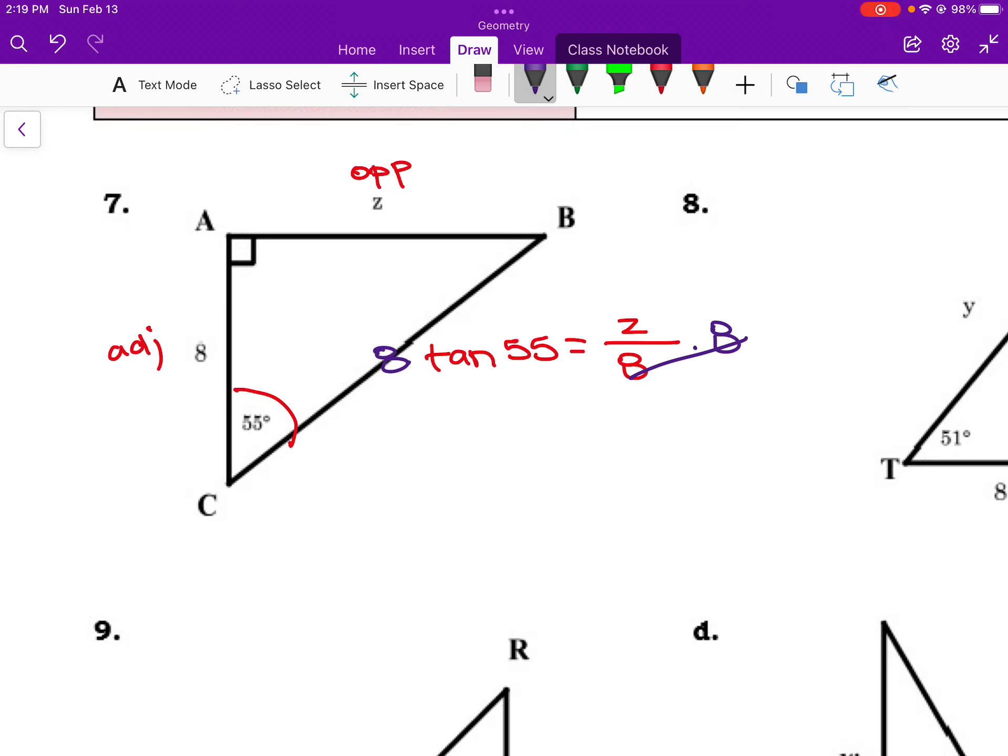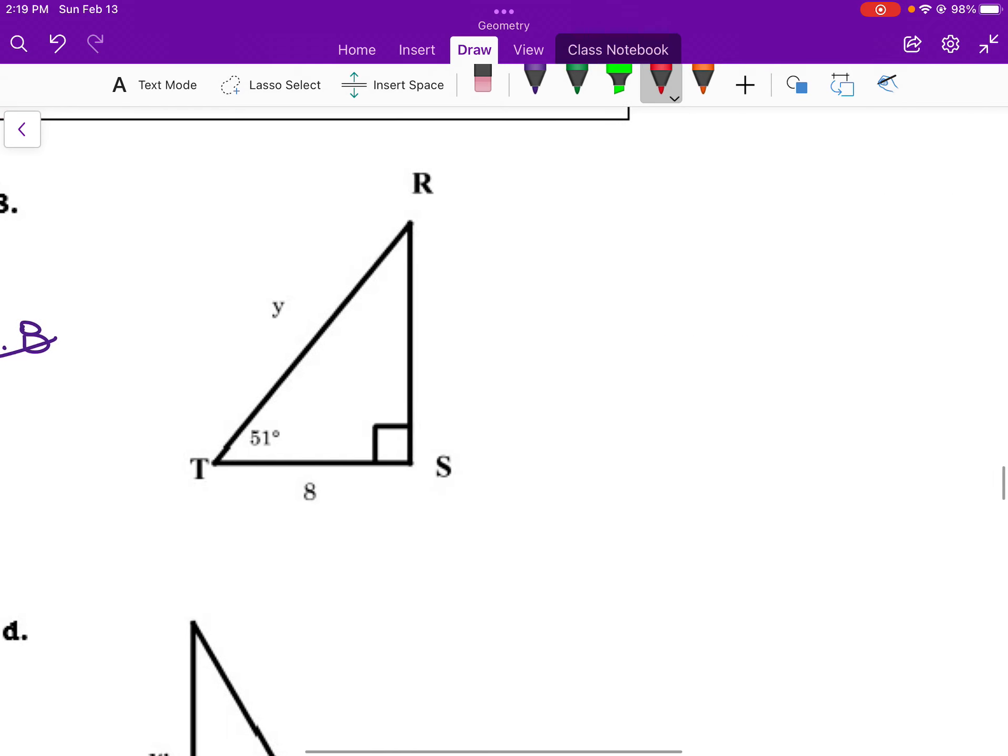Tangent of 55 is 1.428. So I'm taking 8 times 1.428 to get z. So if I multiply that by 8, I get 11.425 for z. And those were both legs. So we weren't expecting one to be necessarily longer than the other, unless we found that missing angle. But yeah, that's good to go.